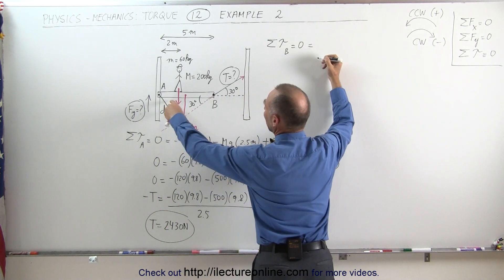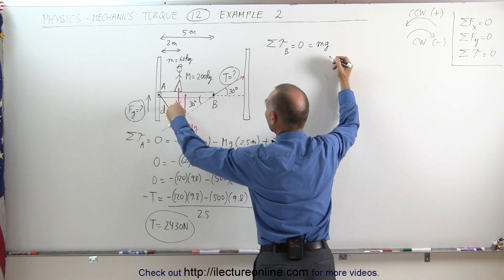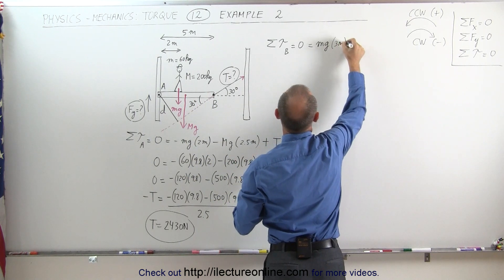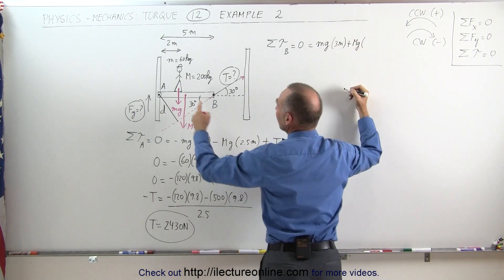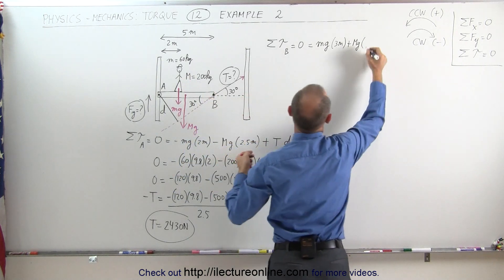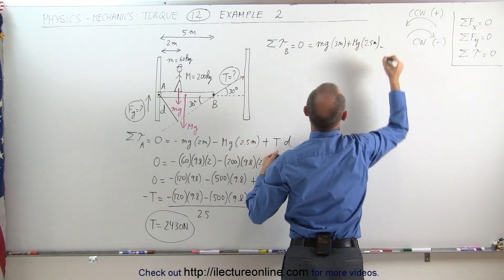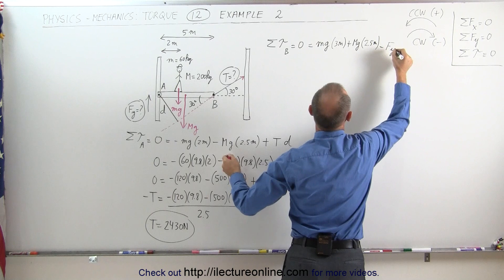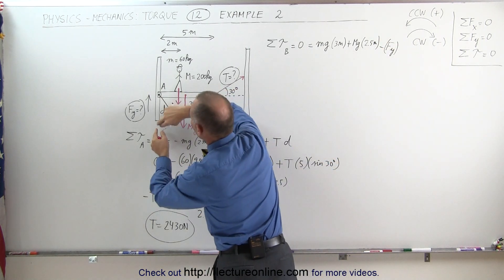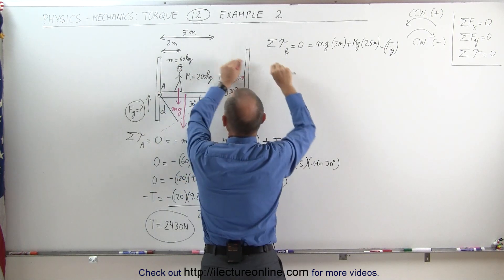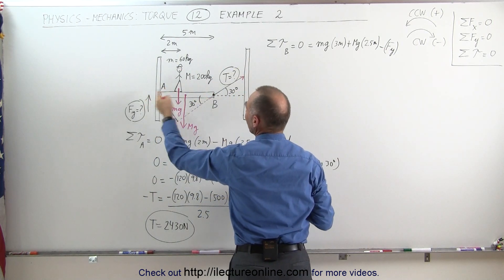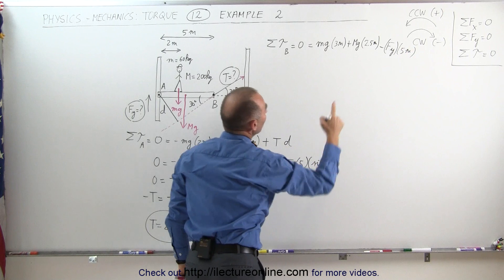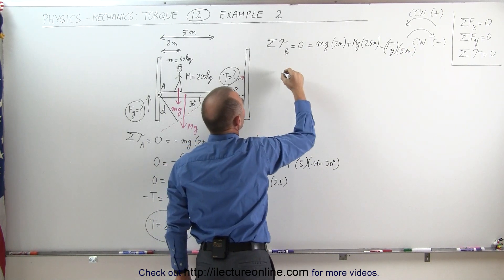The weight of the person, mg, gives a positive torque times the perpendicular distance of 3 meters from pivot B. The weight of the beam gives a positive torque times 2.5 meters. The hinge force Fy gives a negative torque times 5 meters, the distance from the hinge to pivot point B.